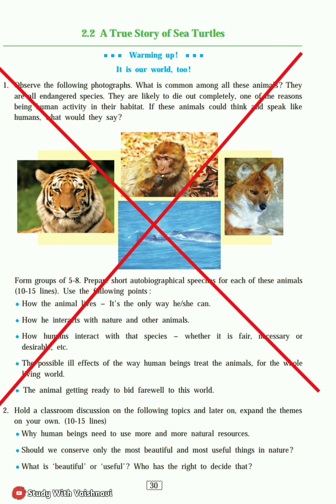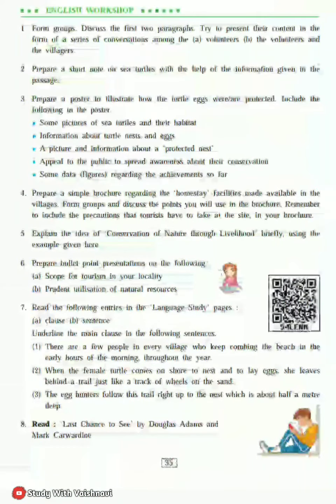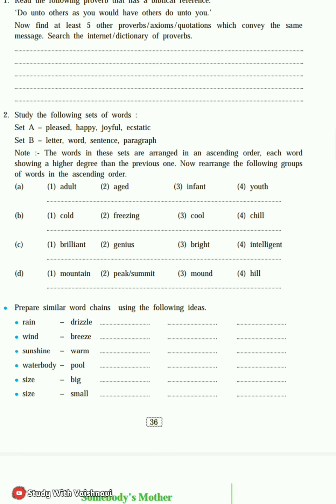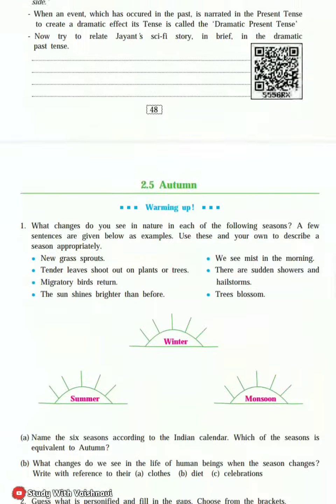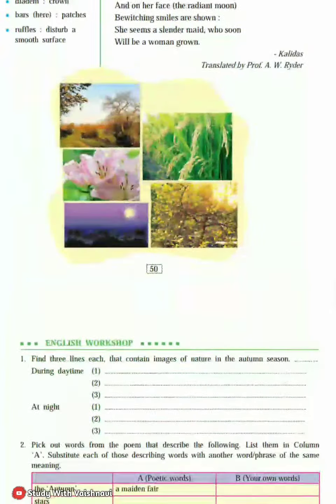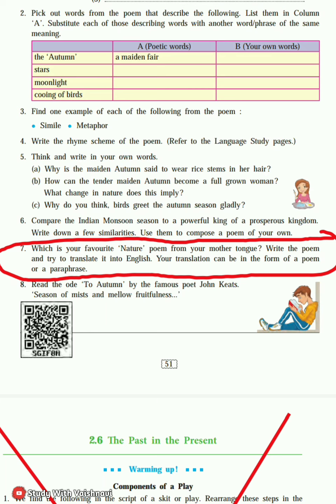2.2 - warming up question number 1 was fully reduced. 2.3 - 'Somebody's Mother', that poem was not reduced. After that, 2.4 - 'The Fall of Troy: Building a Story', page number 39, that question was fully reduced.